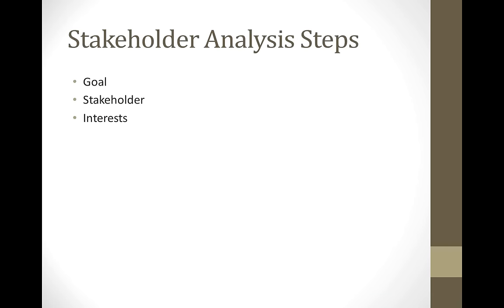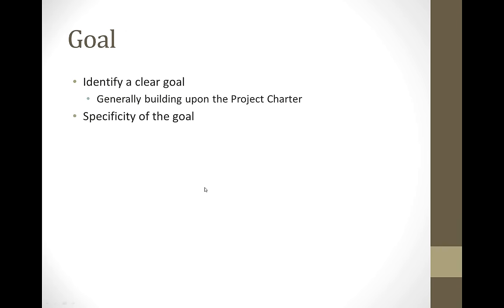The stakeholder analysis has three steps. We start off by defining a goal, identify who the stakeholders are, and then what their interests are. The goal that you identify needs to be a clear and very specific goal, generally identified through the project charter process. If you have multiple goals, you need to develop a stakeholder analysis around each of those independent goals.